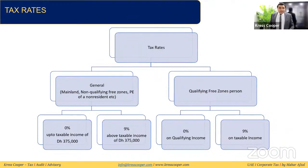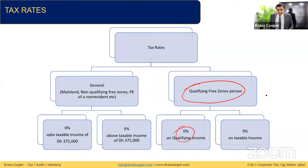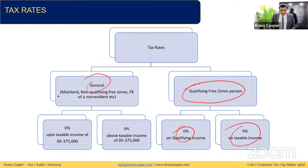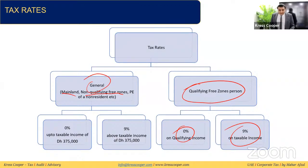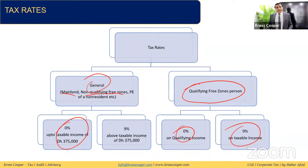The applicable tax rates are: for qualifying free zone persons, 0% on qualifying income and 9% on non-qualifying income. For all other taxable persons — mainland taxable persons, non-qualifying free zone persons, or permanent establishments of non-resident persons — the rate is 0% on taxable income up to AED 375,000, and 9% on taxable income above AED 375,000.